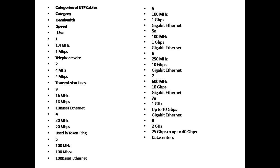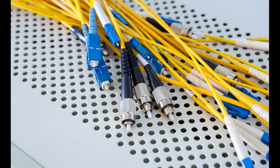UTP cable categories: Category 1 supports 1.4 MHz bandwidth and 1 Mbps, used for telephone wire. Category 2 supports 4 MHz and 4 Mbps. Category 3 supports 16 MHz and 16 Mbps for Ethernet. Category 4 supports 20 MHz and 20 Mbps. Category 5 supports 100 MHz and 100 Mbps. Cat6 cable supports 1 Gbps Gigabit Ethernet.